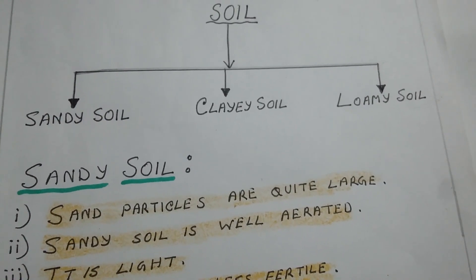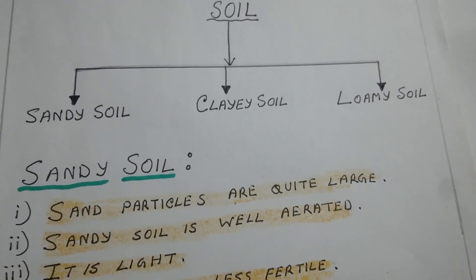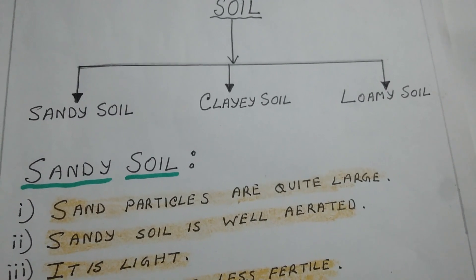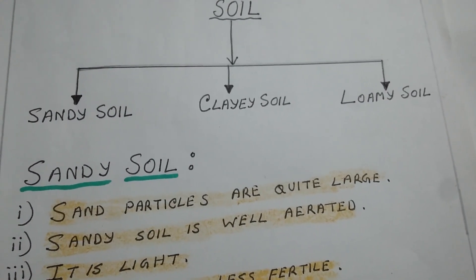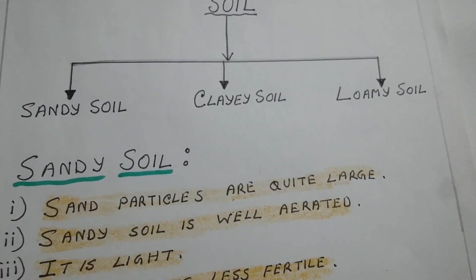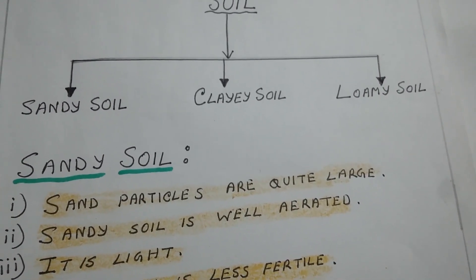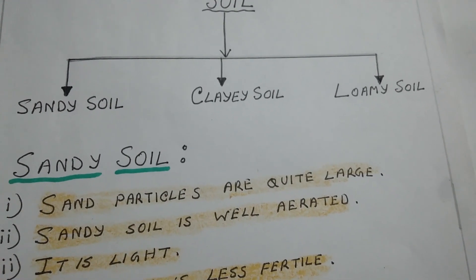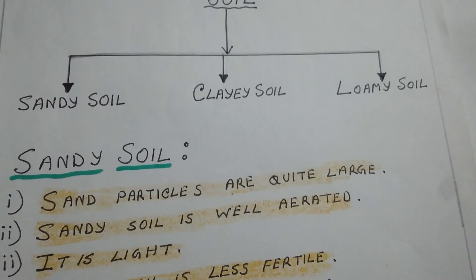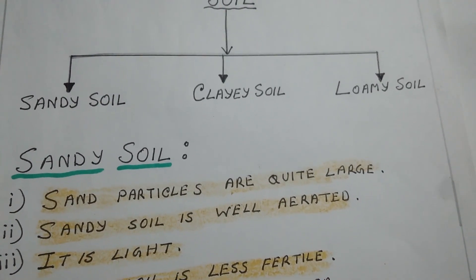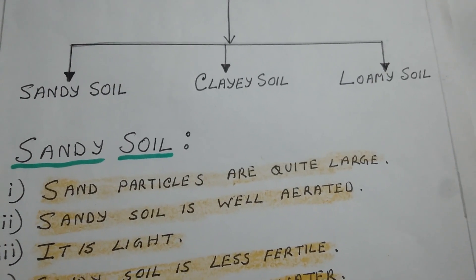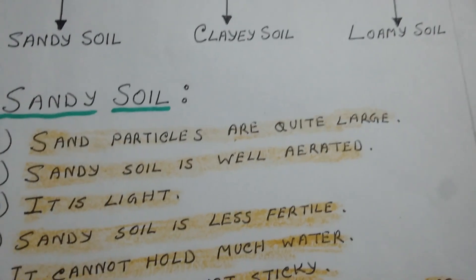Soil is classified into the following types on the basis of the size of the rock particles it contains. The soil is classified into sandy soil, clay soil, and loam soil.